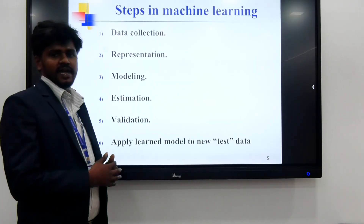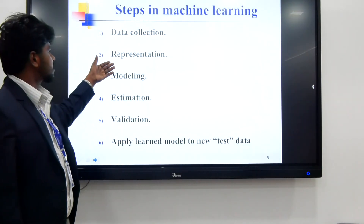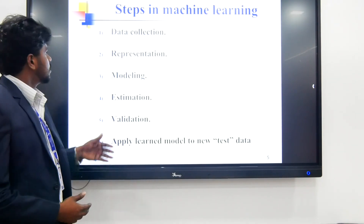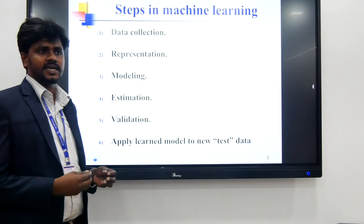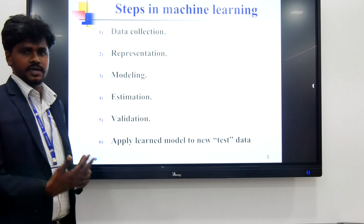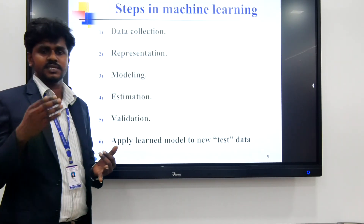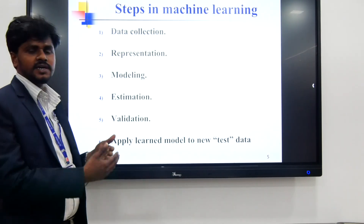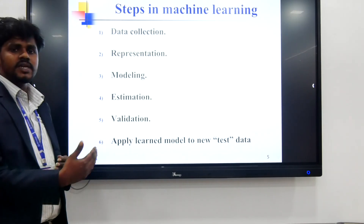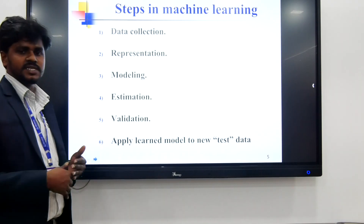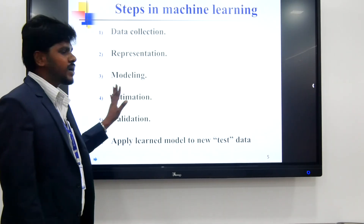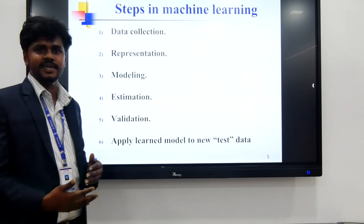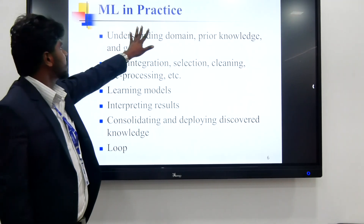Next are the steps for machine learning algorithms. The steps are: data collection, representation, modeling, estimation, validation, and applying the learned model to new text data. Data collection example: a medical data set — a large number of medical data sets used in India. Data collection includes name and sex. Representation uses particular data for modeling. Estimation uses algorithms to estimate for the machine learning estimator. Validation checks how the algorithm is produced for analysis and design.